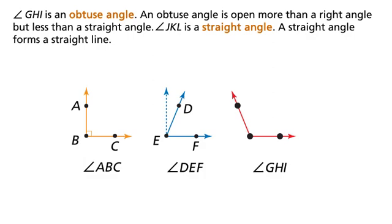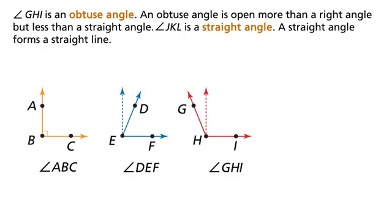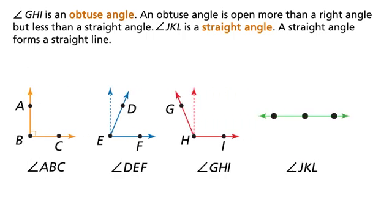Angle GHI is an obtuse angle. An obtuse angle is open more than a right angle but less than a straight angle. Angle JKL is a straight angle. A straight angle forms a straight line.